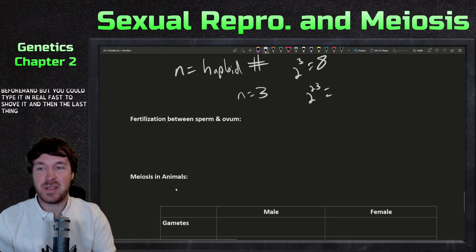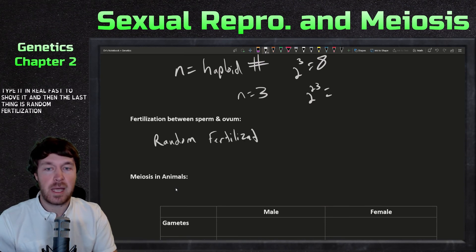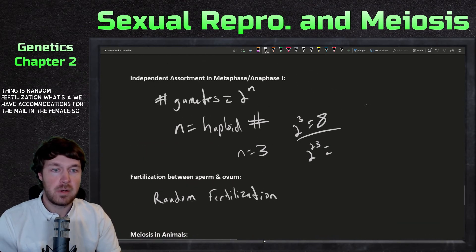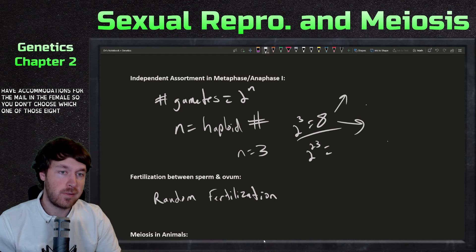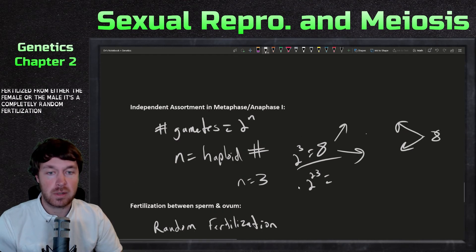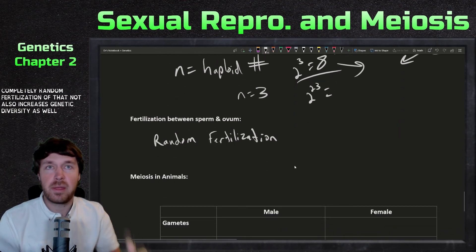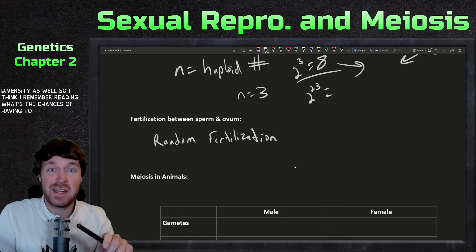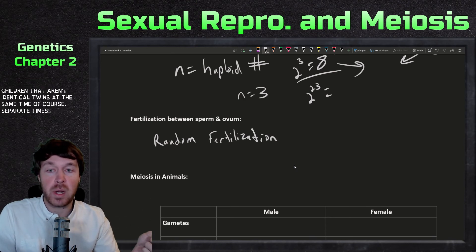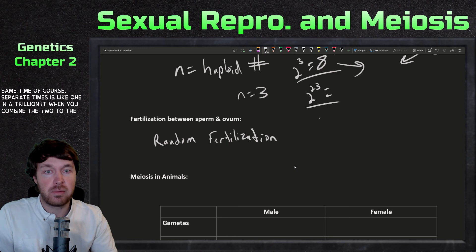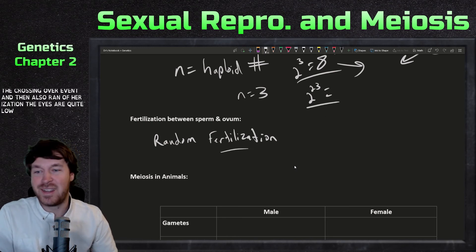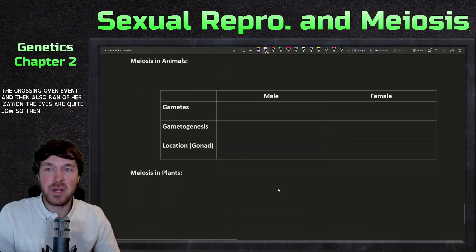The third source is random fertilization. Say we have 8 combinations for the male and female — you don't choose which of those eight are fertilized from either side; it's a completely random fertilization event, which also increases genetic diversity. I remember reading once that the chances of having two genetically identical children — not identical twins — is about one in a trillion. When you combine 2 to the 23, crossing over events, and random fertilization, the odds are quite low.